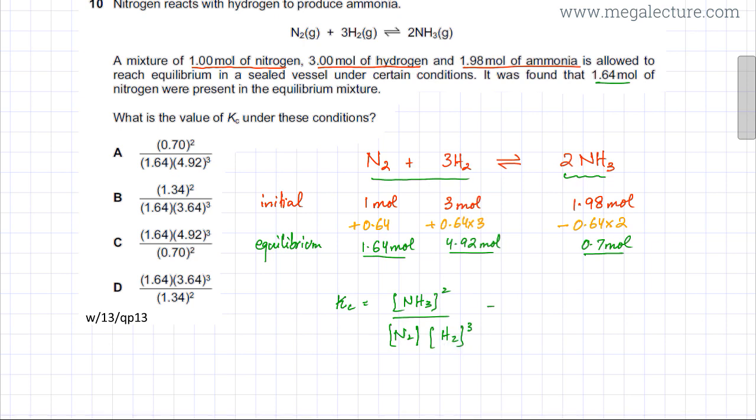So I'm going to insert the values now. It's going to be 0.7 squared divided by 1.64 multiplied by 4.92 cubed. And so according to our expression, option A is going to be the correct option for this question.